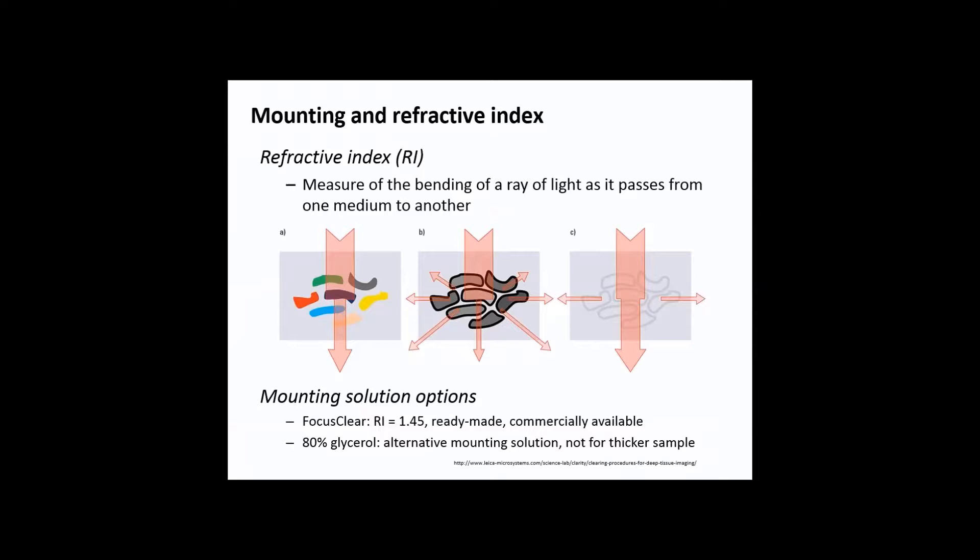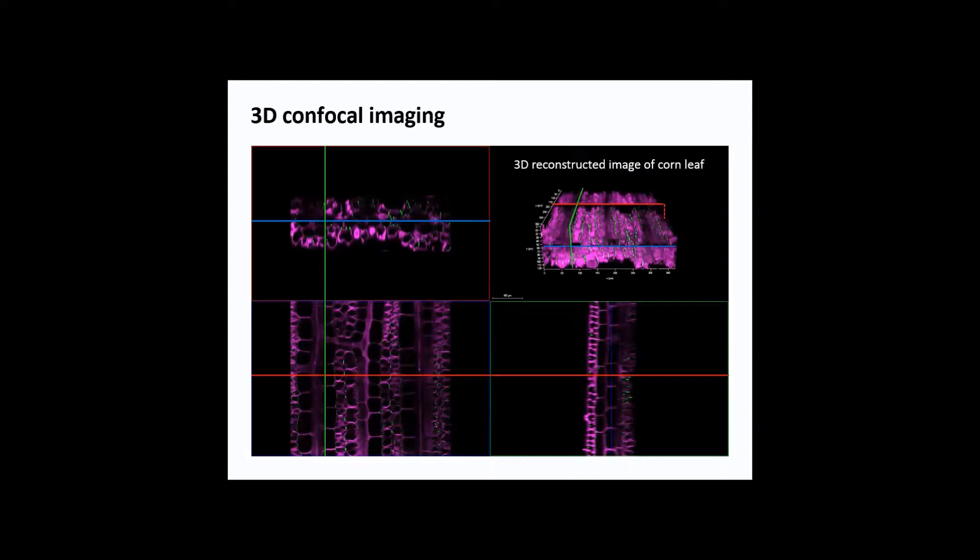Mounting solution options can be ready-made or commercially available like FocusClear with a refractive index of 1.45, the same as the hydrogel. But FocusClear is very expensive, so if you don't have budget you can use 80% glycerol as an alternative, though the limitation is it's not applicable for thicker samples. Since I'm working with leaf which is relatively thin, that's fine. After all this you image it. Since it's perfectly clear you can do a z-stack and image from the top to the bottom of the leaf.